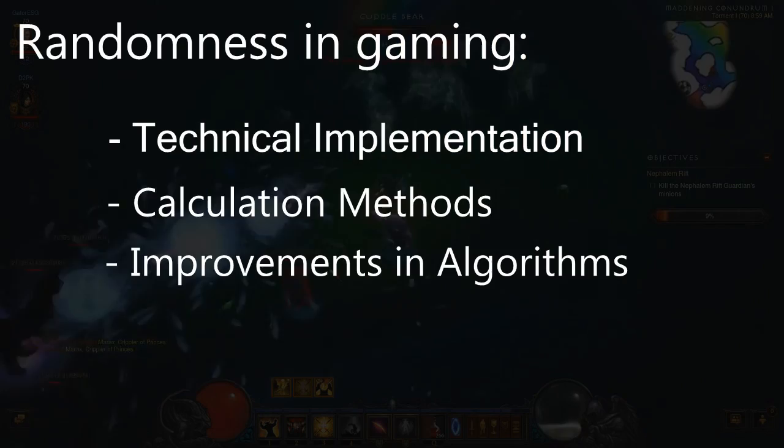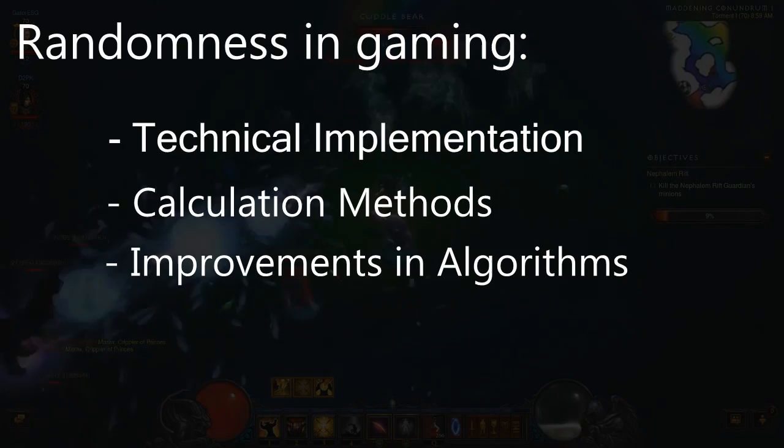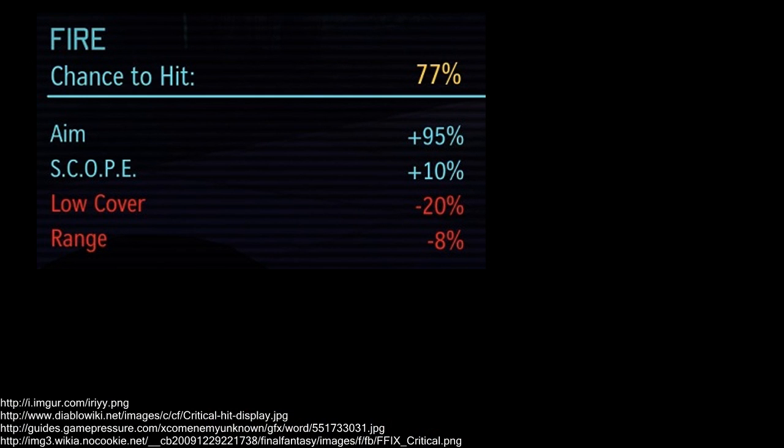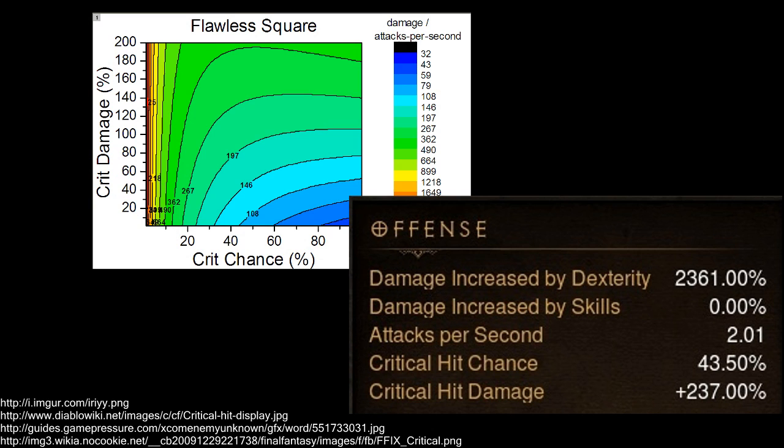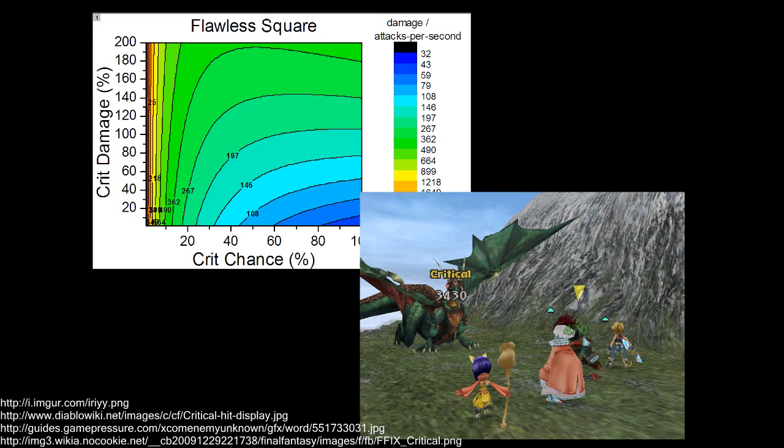Since we're looking specifically at randomness in video games, we'll spend more time looking at the technical side of how RNG, or random number generation, is implemented, calculated, and revised to produce different results. This is a subset of a much bigger question: what is the role of RNG in entertainment? I am wholly unprepared to answer that question, so we'll avoid talking too much about the philosophical value of RNG, and instead focus on its usage and programming.